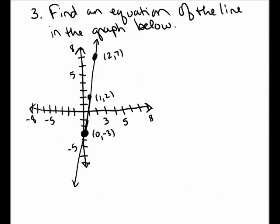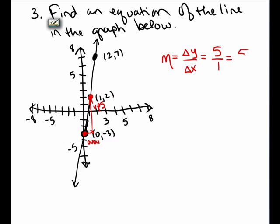Number 3, we want to find the equation of a line given in this graph. I see the graph passes through a few different labeled points: (0, -3), (1, 2), and (2, 7). To find the equation of the line, I will need the slope. Remember that slope is change in y over change in x. Starting at (0, -3) and traveling to (1, 2), I travel over 1 and up 5. So the change in y was positive 5, the change in x was positive 1, giving a slope of 5.